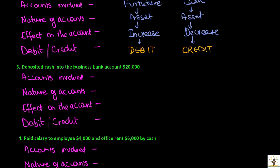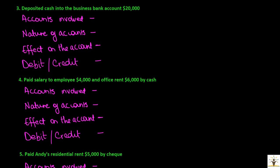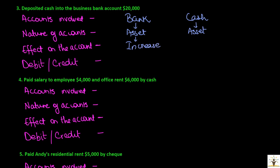Third transaction: deposited cash into bank. One account involved would be the business bank account, and the other is cash account. Bank is an asset and cash is also an asset. When money is deposited into the bank account, the bank balance increases and the cash balance will decrease. Hence, bank will be debited and cash will be credited.